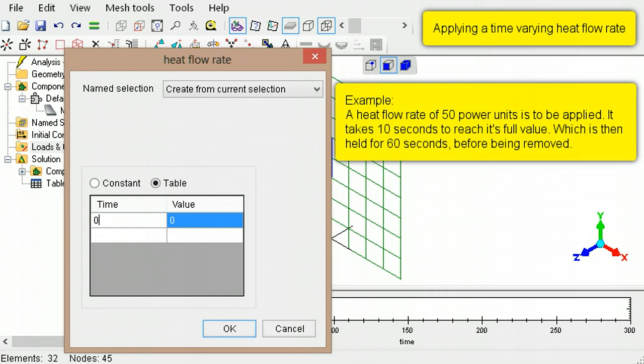In the table at time 0, a 0 heat flux will be specified. At 10 seconds, the heat flux reaches its full strength of 50. It then remains constant up to 70 seconds into the analysis, after which it is removed.